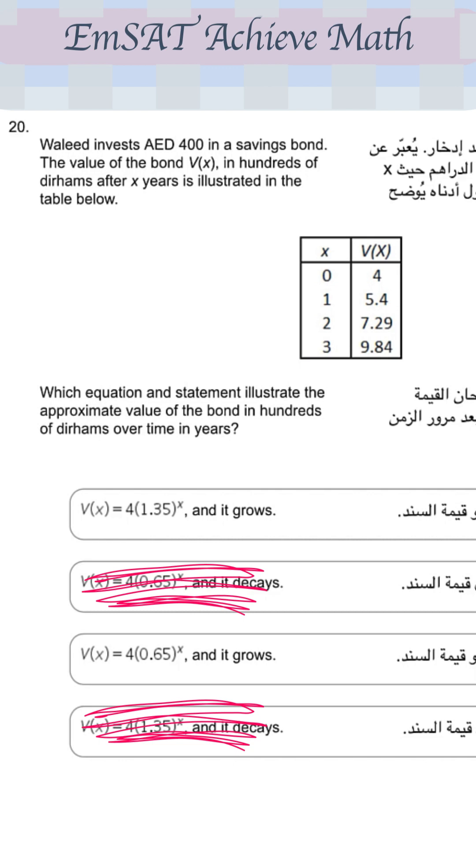So we can find the answer straightforward, which is the first choice, 4 into 1.35 to the power of X. If you don't know that, you can go for the calculator and start placing 0, 1, 2, 3 in each one of those answers and find if it gives you the correct values for V of X.